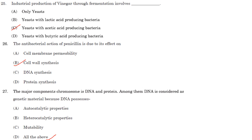The major components of a chromosome are DNA and protein. DNA is considered the genetic material because it possesses autocatalytic properties — the ability to replicate by itself — heterocatalytic properties, where DNA gives rise to RNA through transcription, and mutability, which provides opportunity for evolution. So the answer is option D, all of the above.